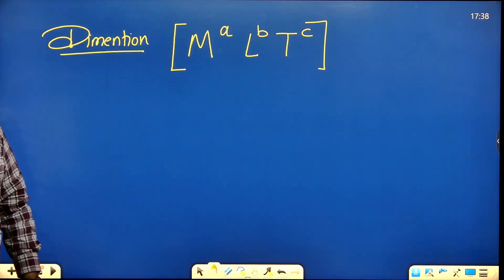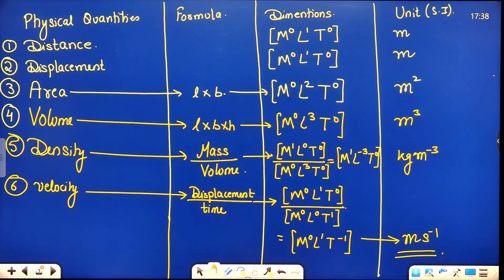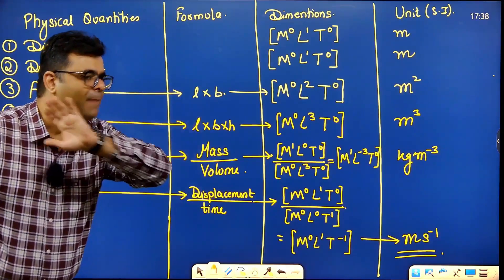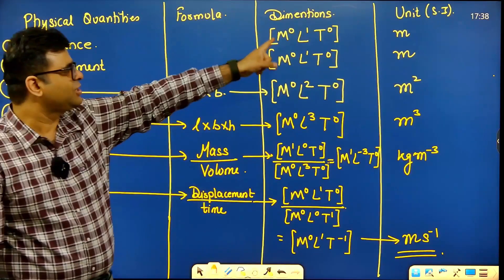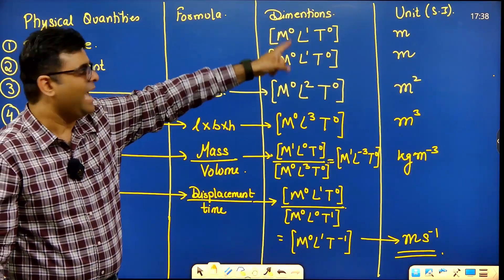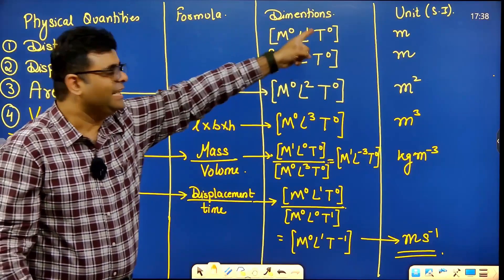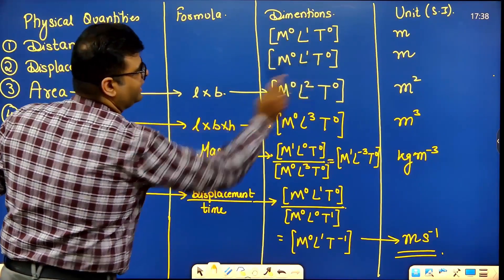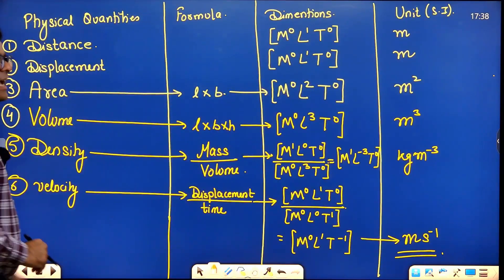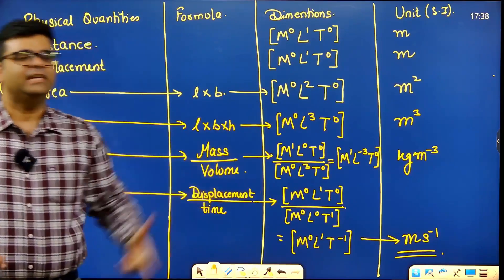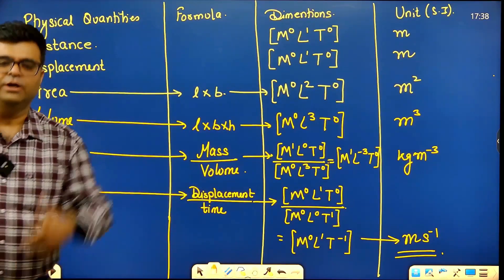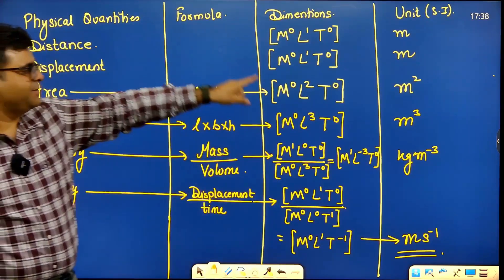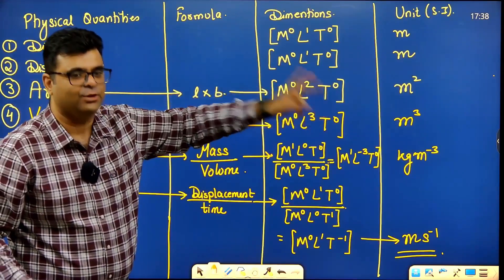For example, distance has only one length — no mass, no time — so in dimension notation it is written as M⁰L¹T⁰. Similarly displacement is M⁰L¹T⁰. For area, there are two lengths (length × breadth, or π r²), so it will always be meter squared. The dimensions of area are M⁰L²T⁰.